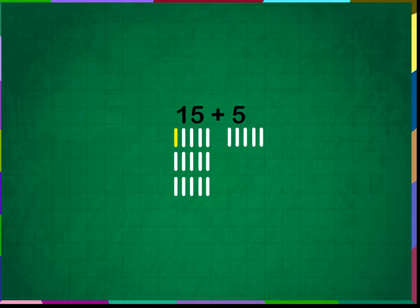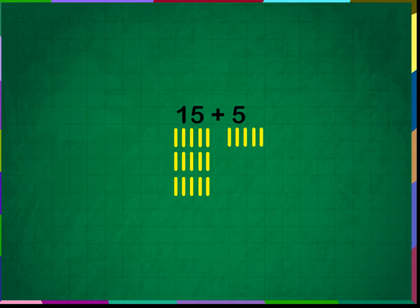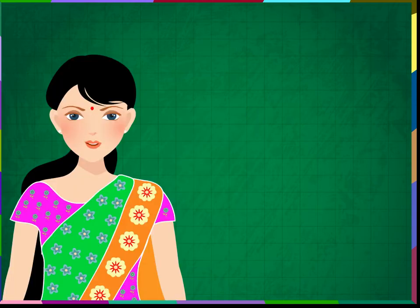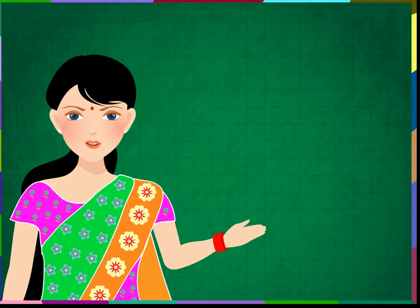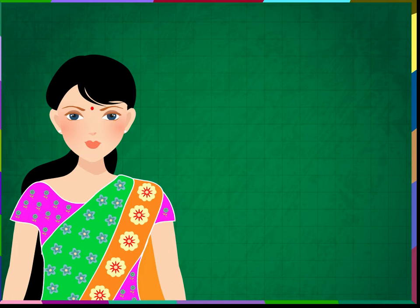Now count all the lines: 1, 2, 3, 4, 5, 6, 7, 8, 9, 10, 11, 12, 13, 14, 15, 16, 17, 18, 19, 20. Therefore, 15 plus 5 is equal to 20.